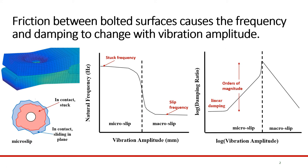We know that bolts are a significant source of damping and frequency change in built-up structures. At low amplitudes, the region closer to the bolt remains stuck due to the bolt preload being applied, while regions further away from the bolt tend to slip. This is known as micro-slip. In the micro-slip region, there is a small change in frequency with an increase in vibration amplitude, while there is a large increase in the damping ratio as vibration amplitude increases.